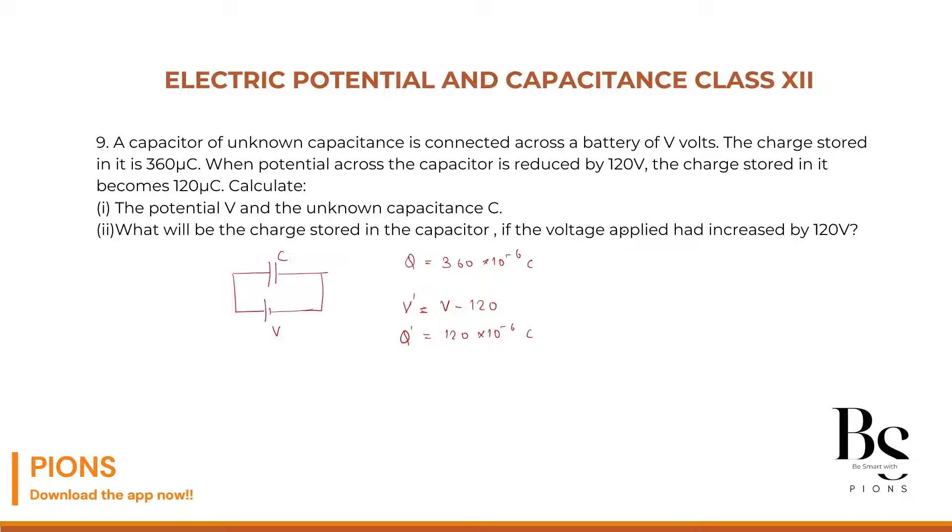Let me repeat again the question and be clear with what they are saying. I took a capacitor, connected to any battery, random battery with voltage V. I don't know how much it is. It can be 200 volt, 500 volt, 1000 volt, anything. When I connected to this V voltage, the charge that the capacitor can store will be Q, which will be 360 into this. Now, what I did? I reduced the battery voltage.